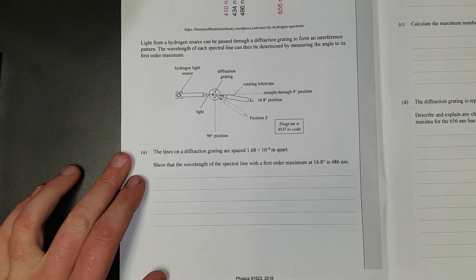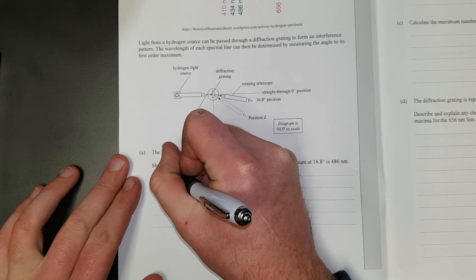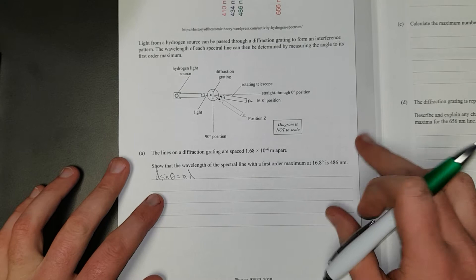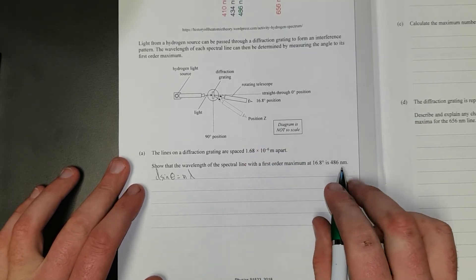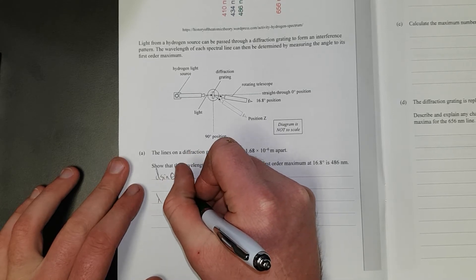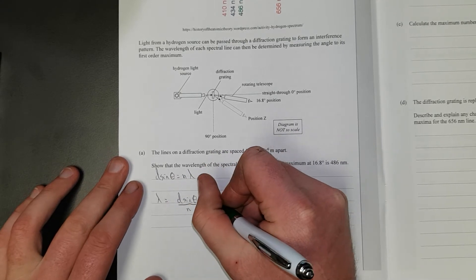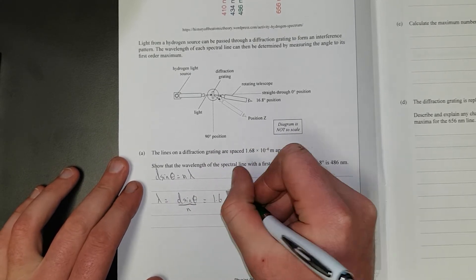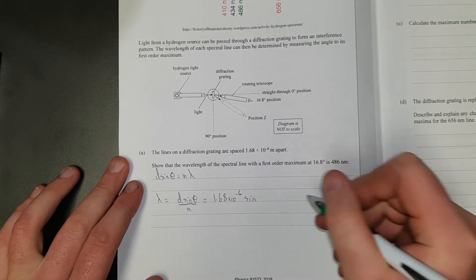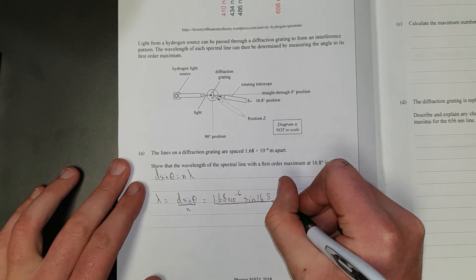This is a show question, so you're going to have to first write the formula. And on your formula sheet, you'll see D sine theta is equal to N lambda. Then you'll have to rearrange, because you're showing that the wavelength is equal to that. So lambda is equal to D sine theta divided by N...